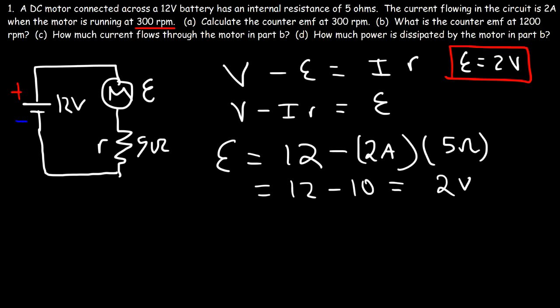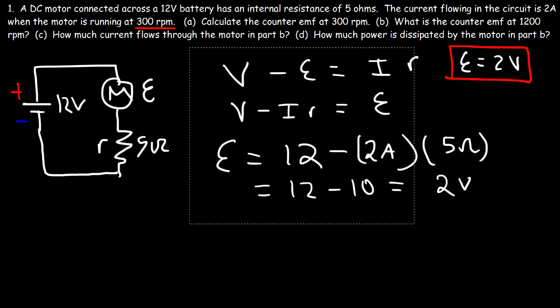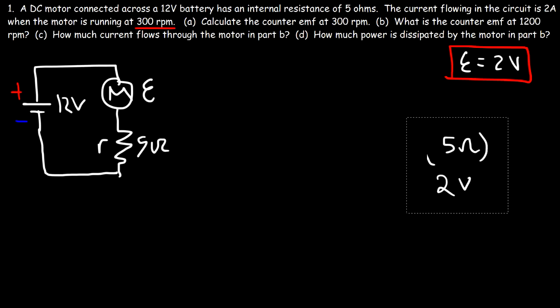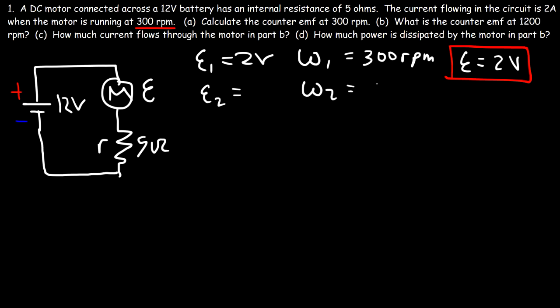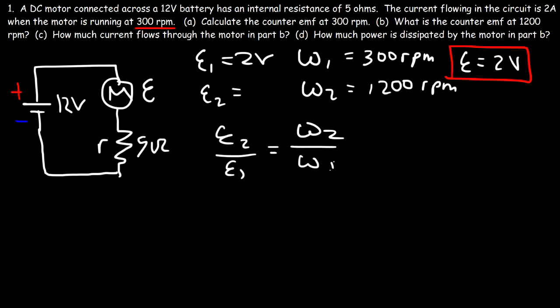Now let's find the counter EMF at 1200 RPMs. Using the proportional formula from the previous problem: EMF1 is 2 volts at omega1 of 300 RPMs, and we're looking for the new counter EMF at omega2 of 1200 RPMs. So the first EMF is 2 volts, we're solving for the second, omega1 is 300 and omega2 is 1200.